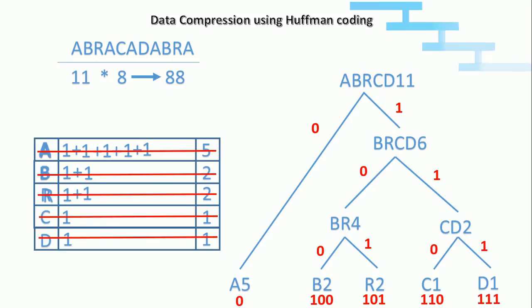As we said earlier, the thumb rule is the higher the frequency, the lesser the number of bits to represent the character. In this case, A which has higher frequency, it takes only 1 bit to represent. D and all other characters which have comparatively lesser frequency, it takes longer bits to represent.